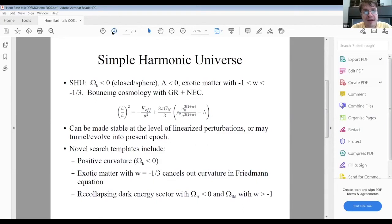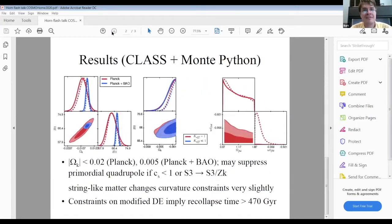Within general relativity and null energy condition preserving sources, we showed in an earlier paper that this universe can be made stable at the level of linearized perturbations as long as the sound speed is positive. Lately we've been thinking about what can happen if this tunnels or evolves into the present epoch. It suggests unusual search templates, in particular positive curvature which is somewhat less favored in the theoretical literature than negative curvature. This may or may not be accompanied by a string-like matter source that energetically cancels curvature out of the Friedman equation.